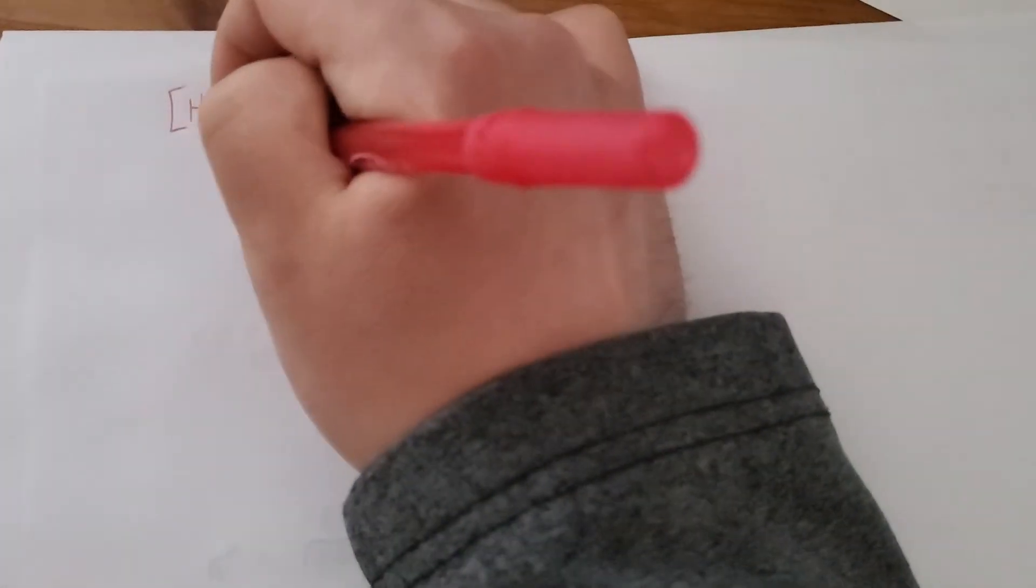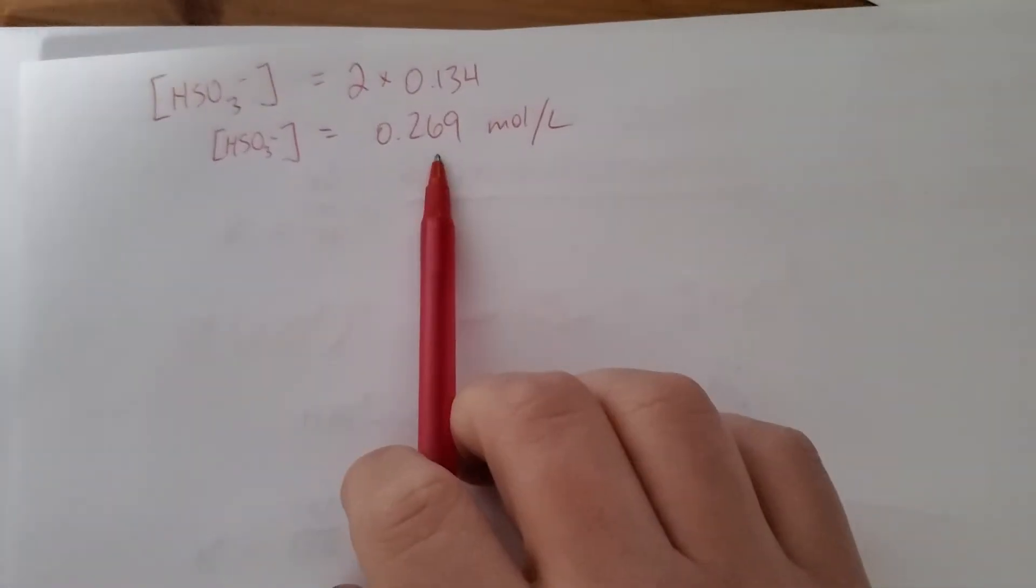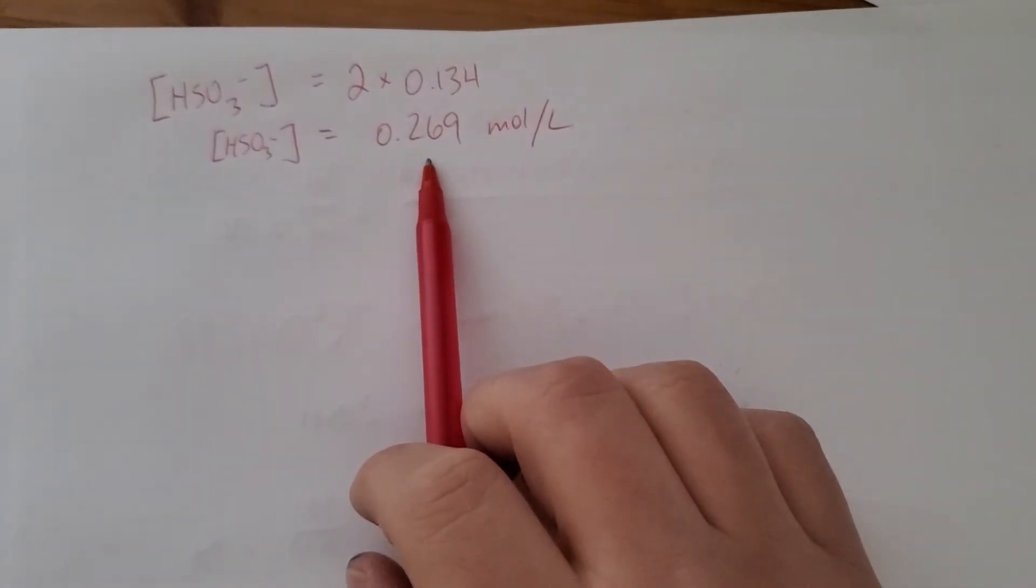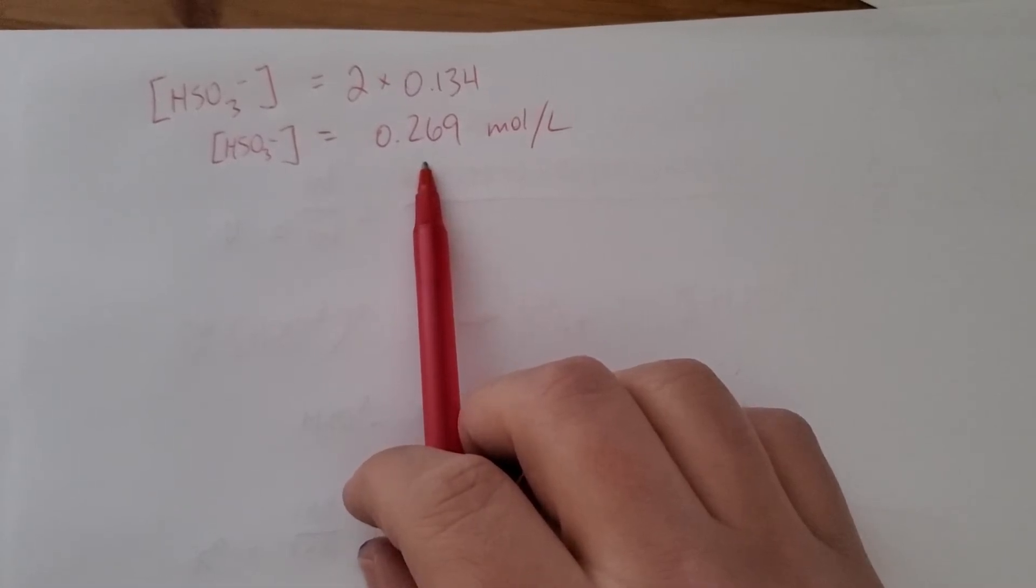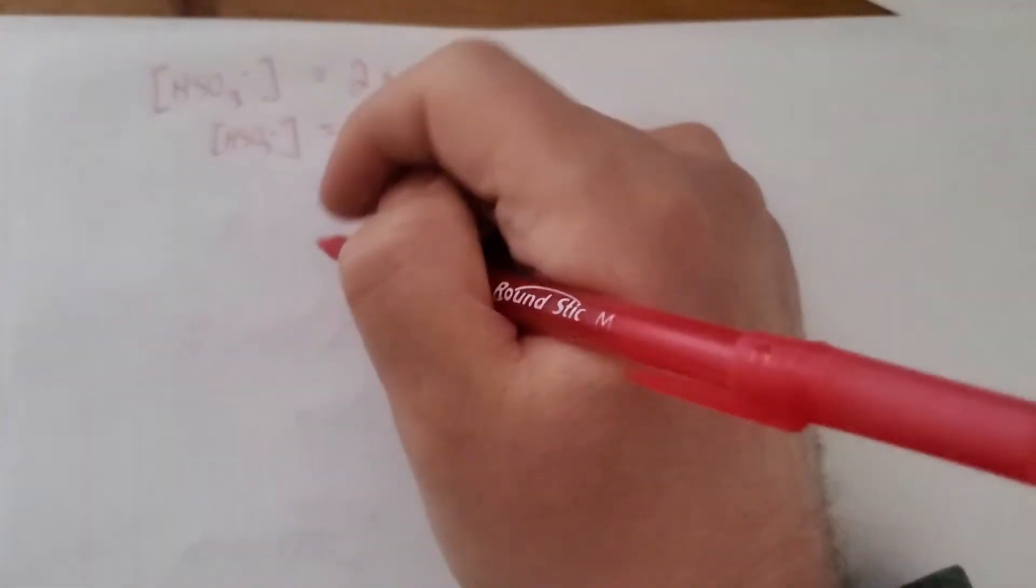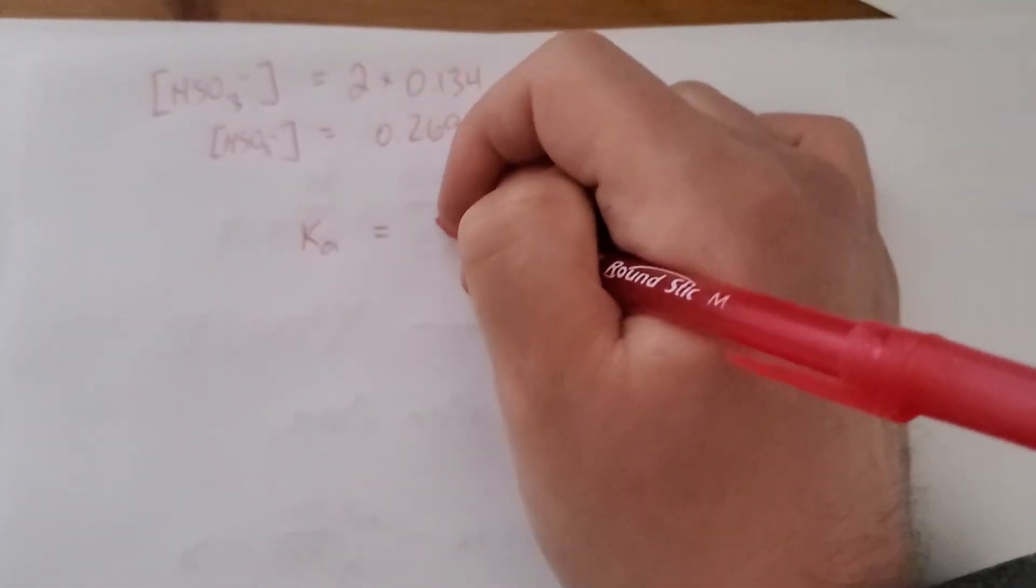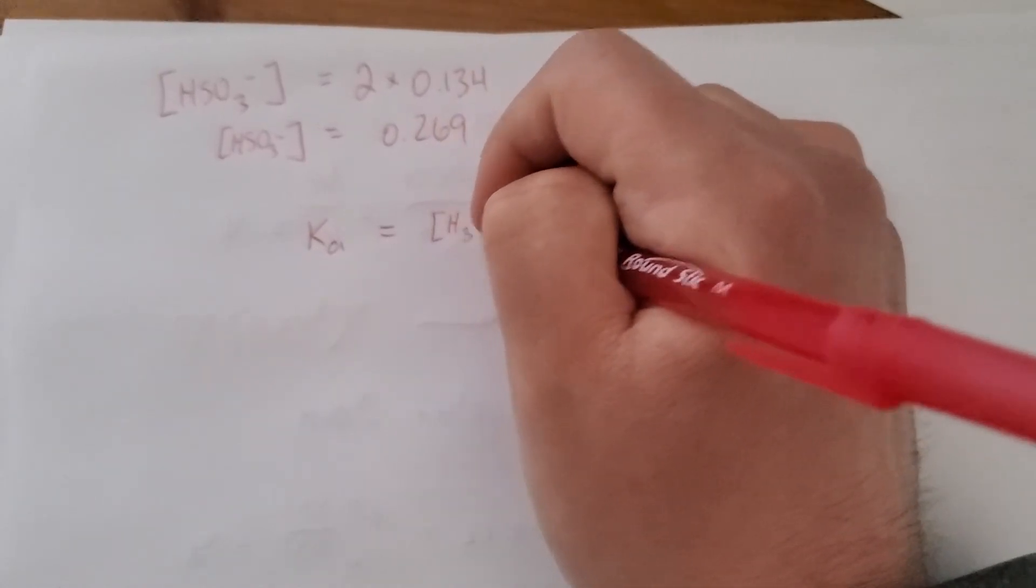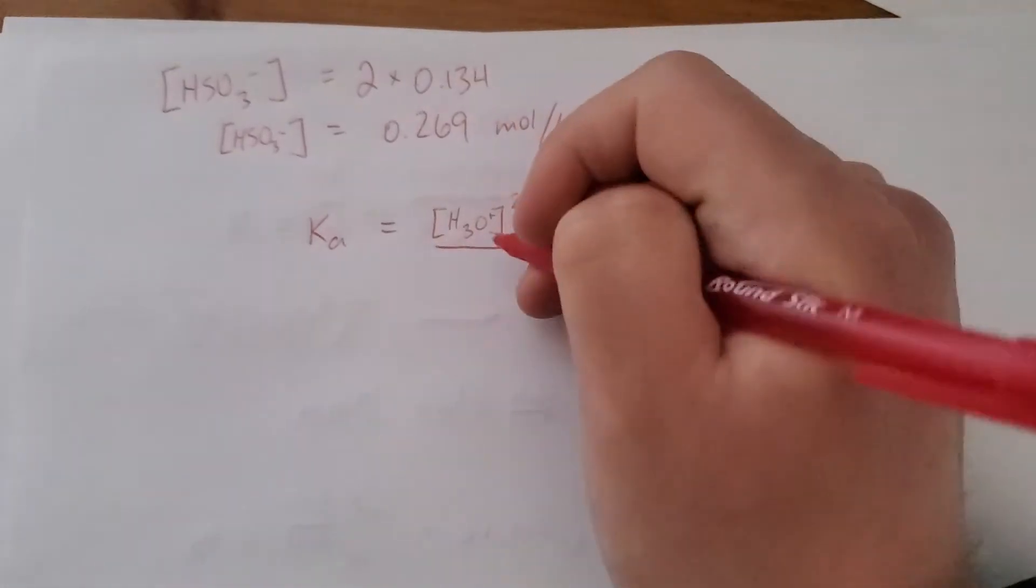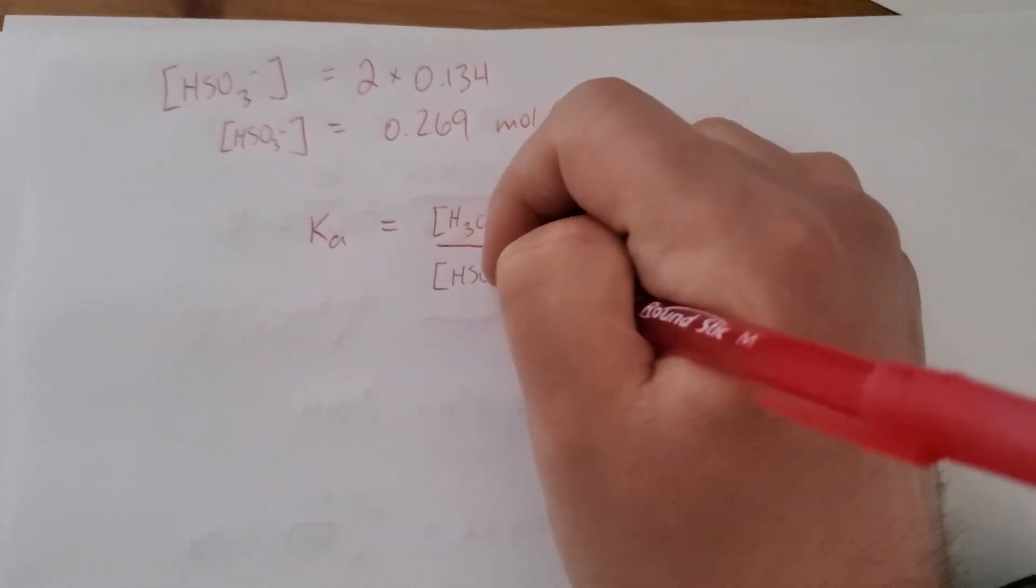So, we need this. This will be the value we use with Ka to find the H3O+ concentration. We've done that a whole bunch. I know you guys are really good at it. So, Ka is going to be the H3O+ concentration squared over the HSO3- concentration.